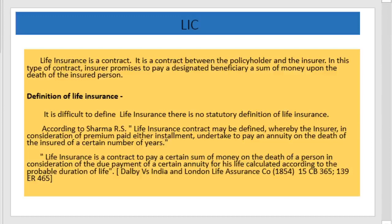There exist different definitions for life insurance. For example, according to Sharma R.S., life insurance contracts may be defined whereby the insurer, in consideration of a premium paid either in installments, undertakes to pay an annuity on the death of the insured or after a certain number of years.